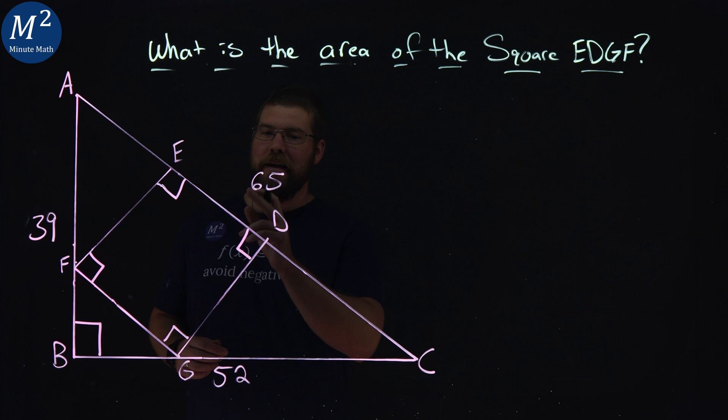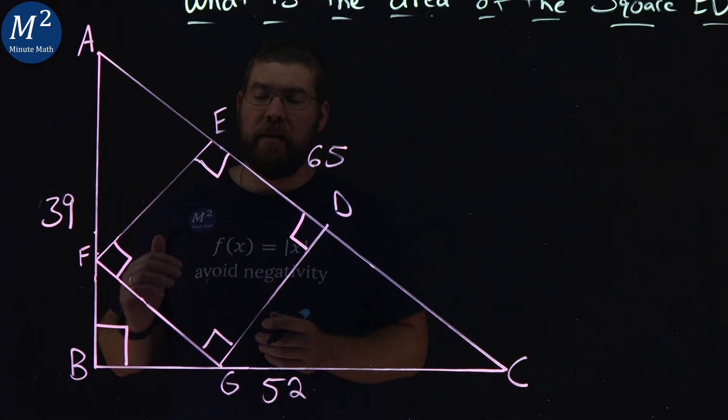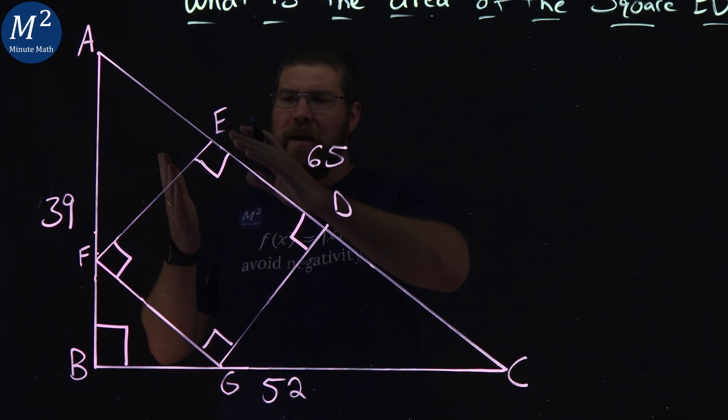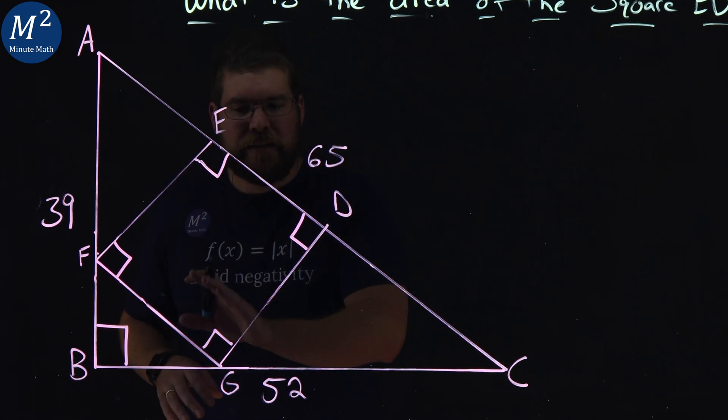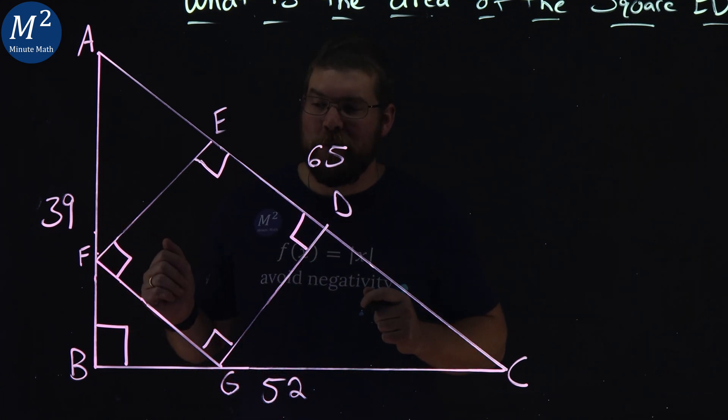What is the area of square EDGF? We're given this triangle here with side lengths 39, 52, and a hypotenuse of 65, and we have a square inside of it. What is the area of the square? Let's get after it.